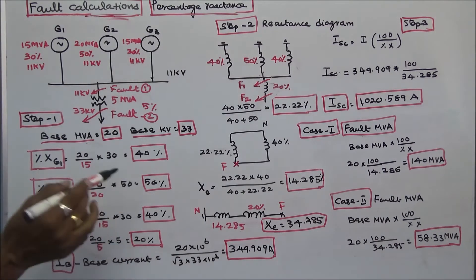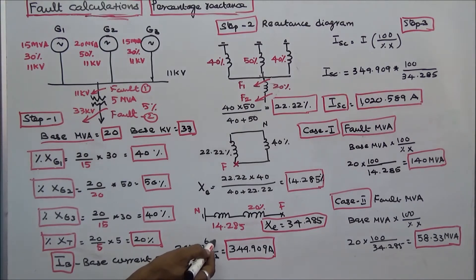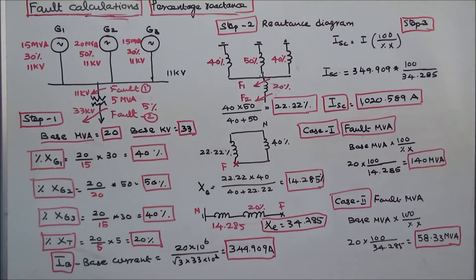Next, I calculate the base current. Base current is equal to base MVA — 20 × 10⁶ — divided by root 3 × 33 × 10³, which equals 349.909 amps.